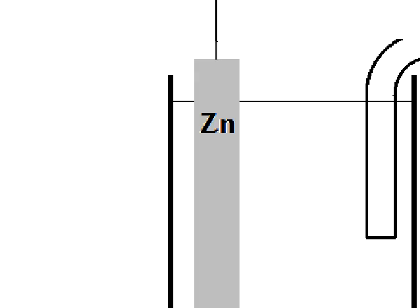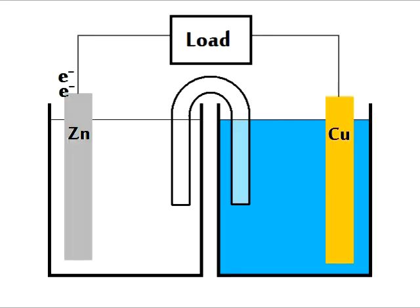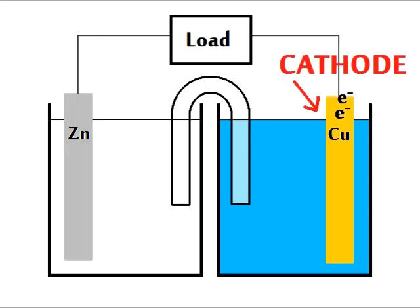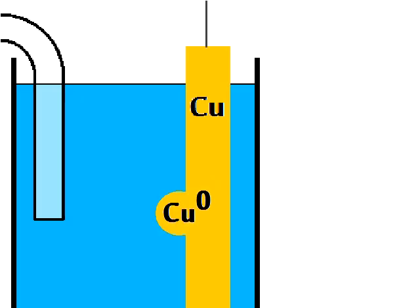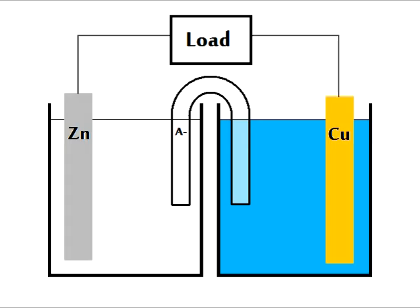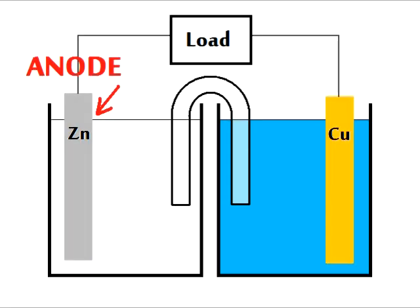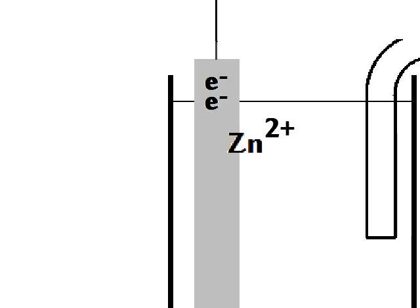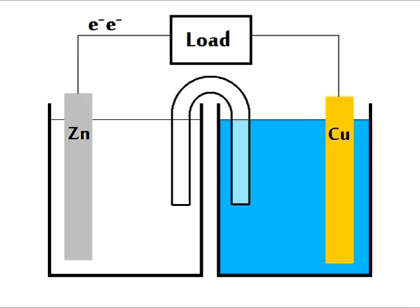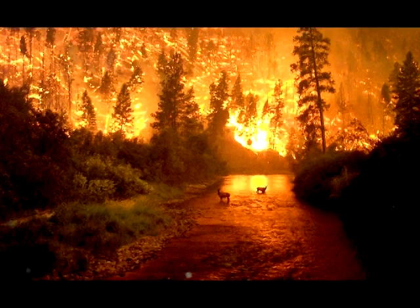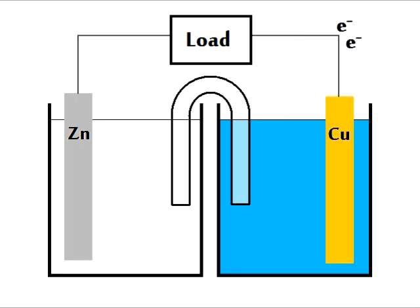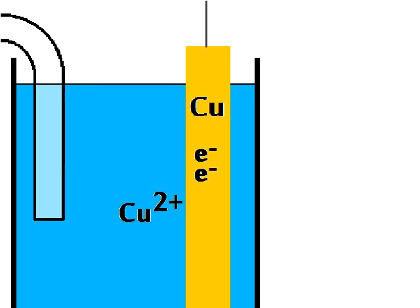We start at the anode, electrons are lost there, and go through the wire and through the load on fire. They enter the cathode and reduce the cations.